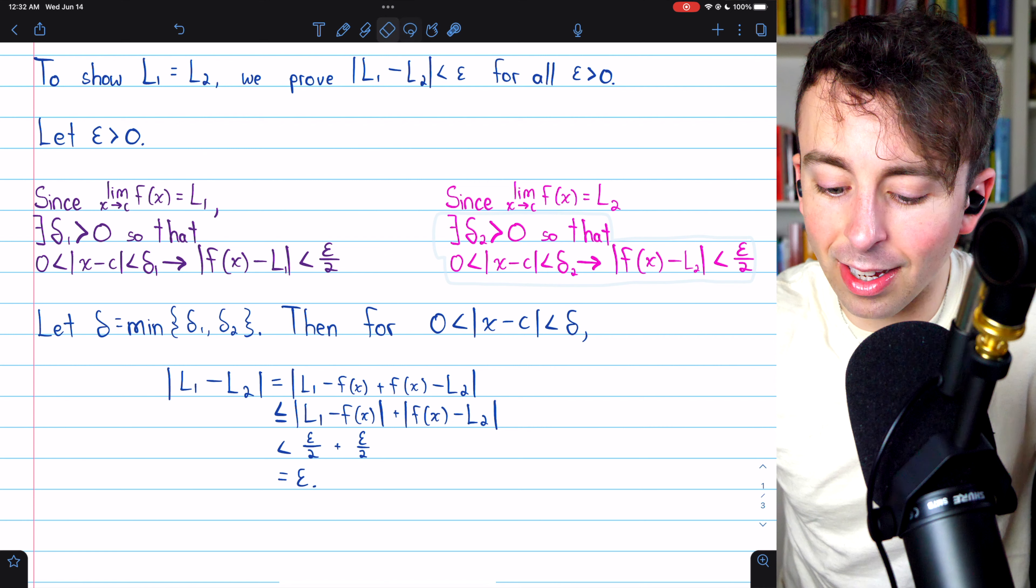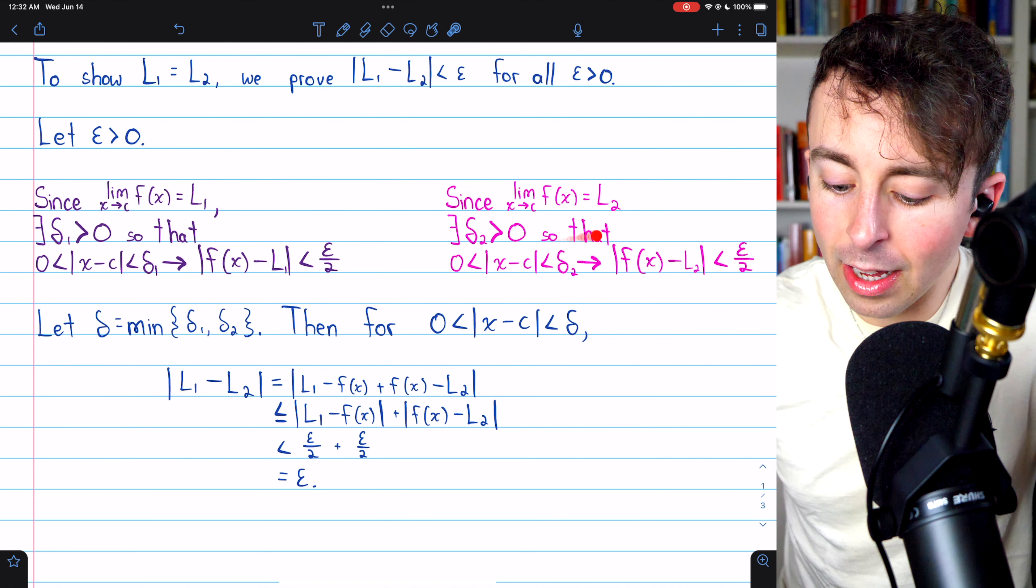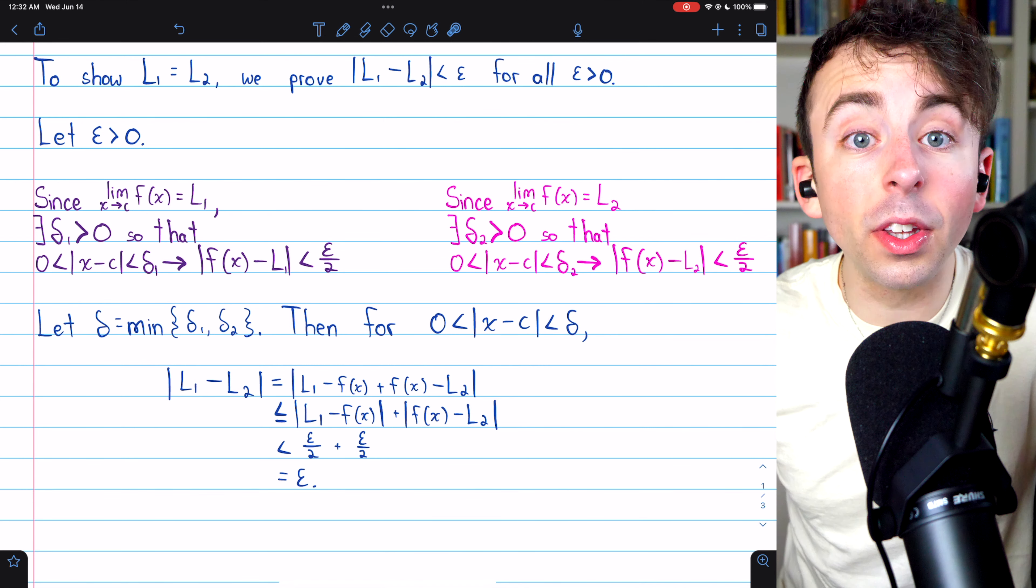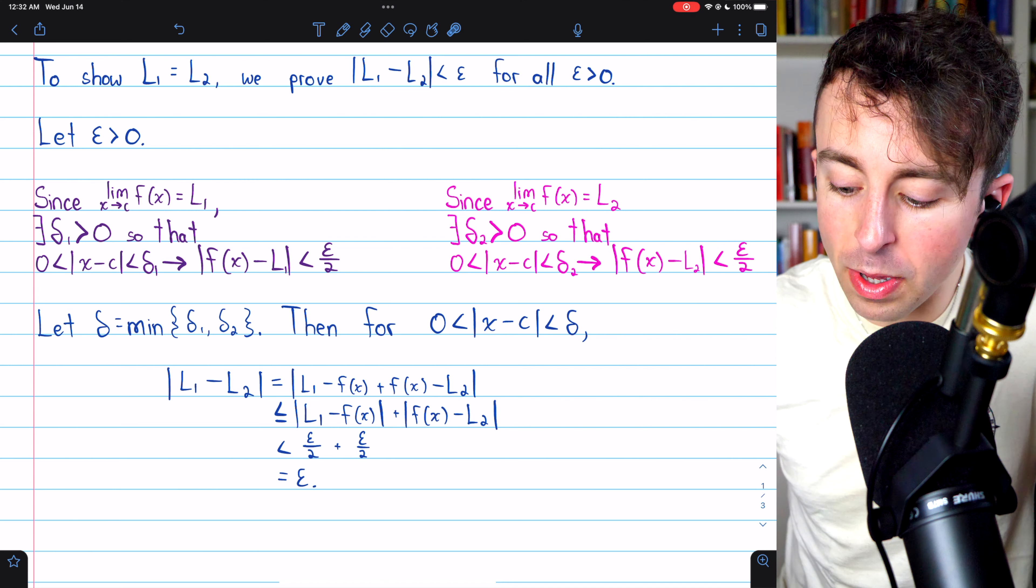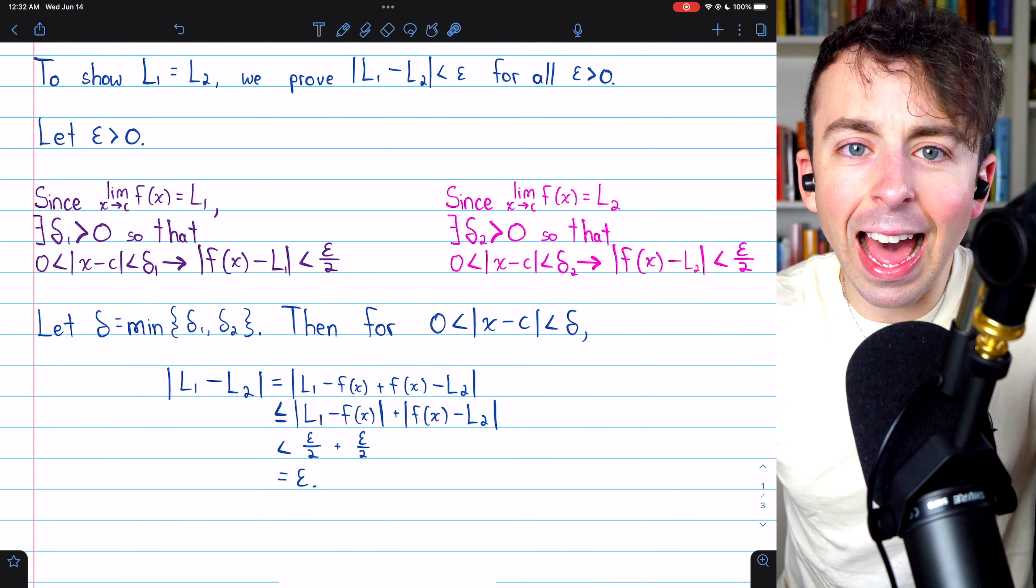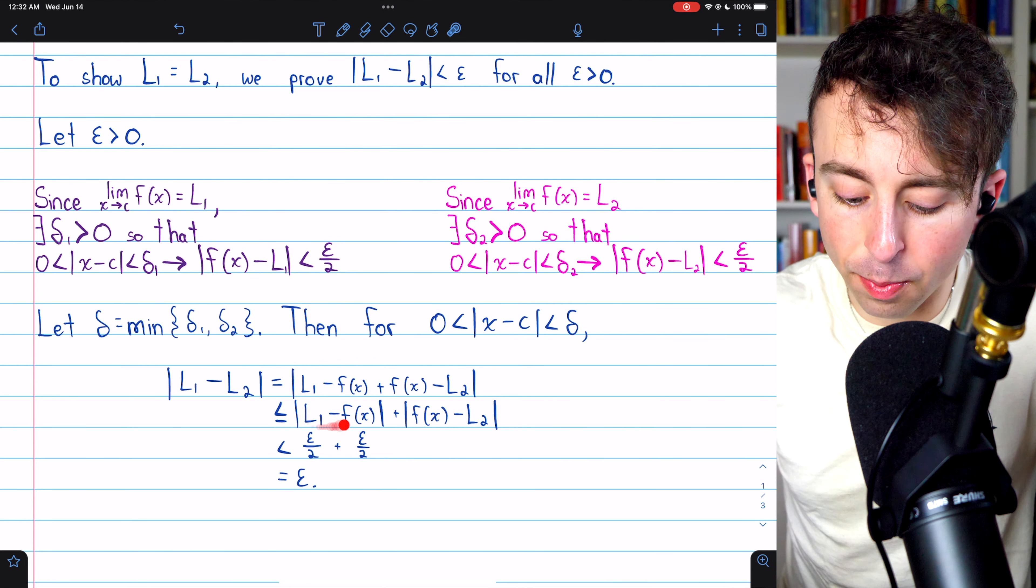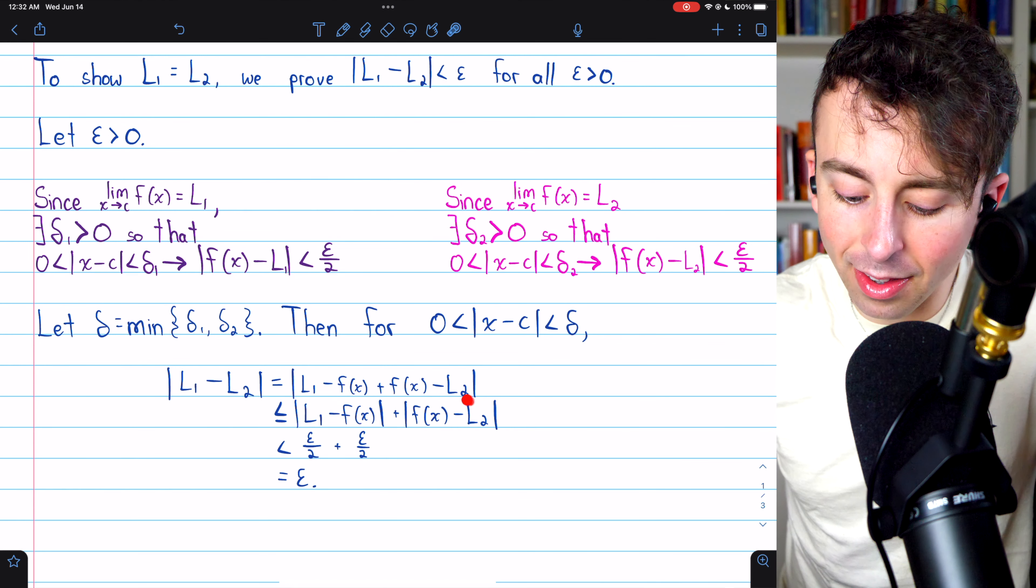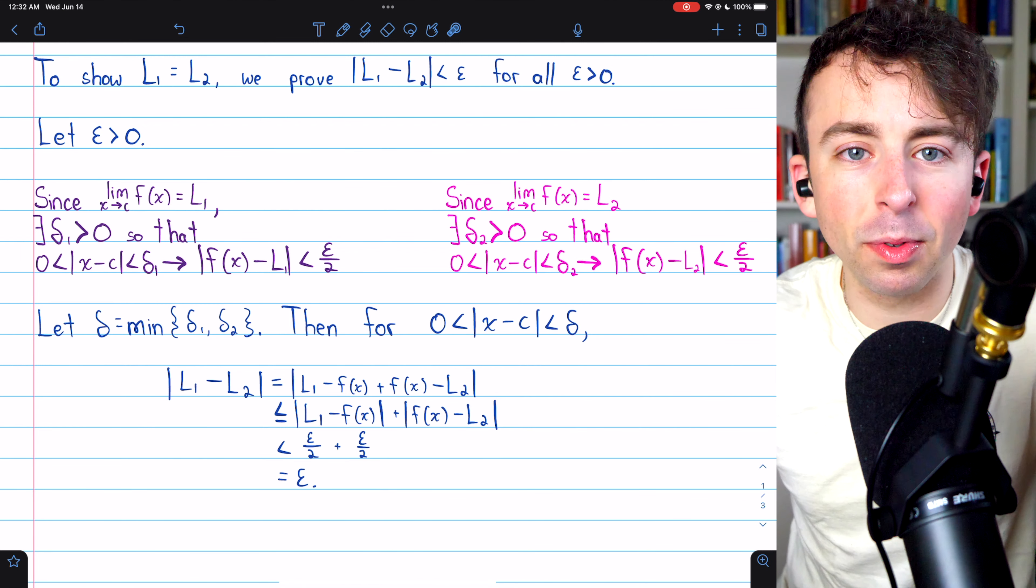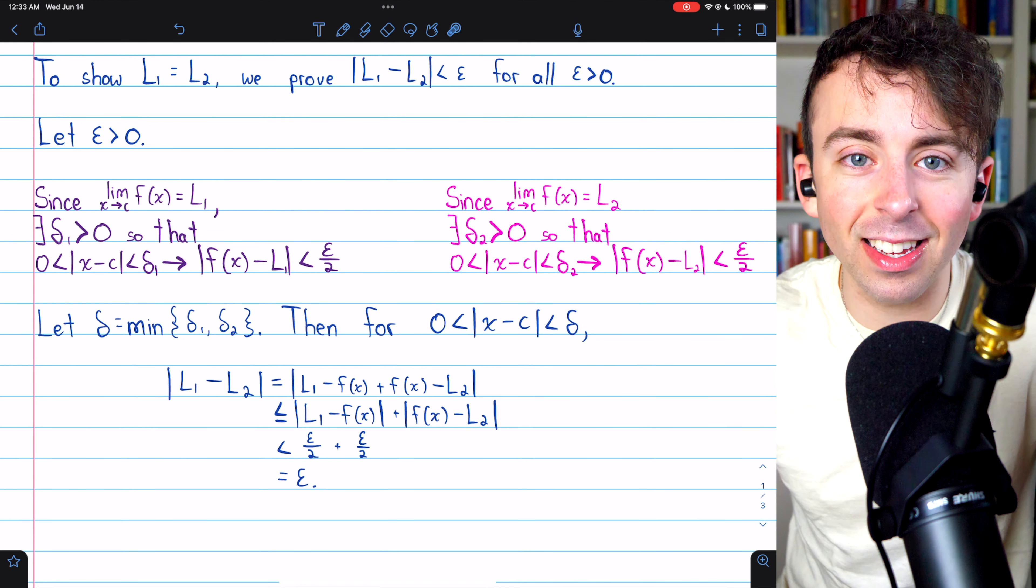Similarly, over here, there must exist a positive number delta 2 greater than 0, so that for all X that are within delta 2 of the limit point C, f of X will be within epsilon over 2 of its limit L2. But then, how do we ensure that both of these conditions apply? That the distance between f of X and L1 and the distance between f of X and L2 are both less than epsilon over 2?